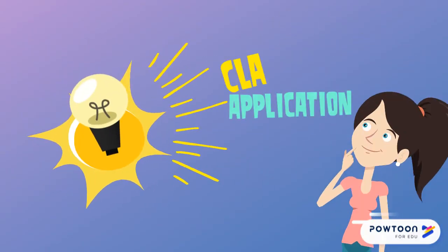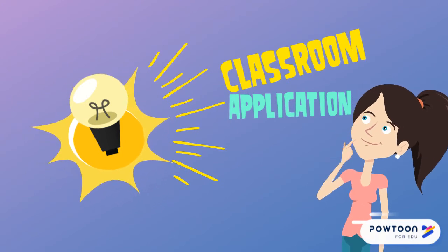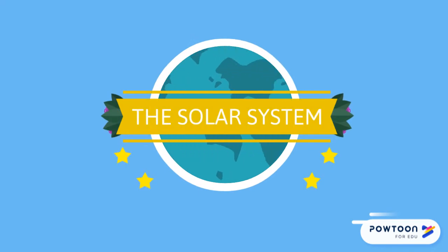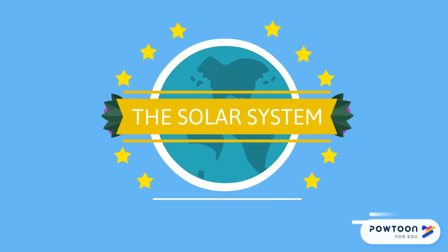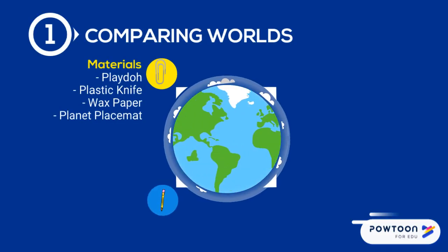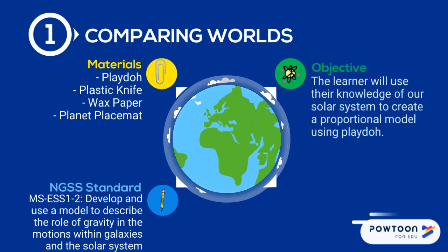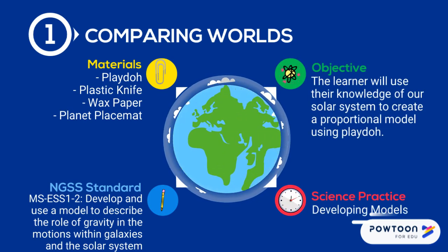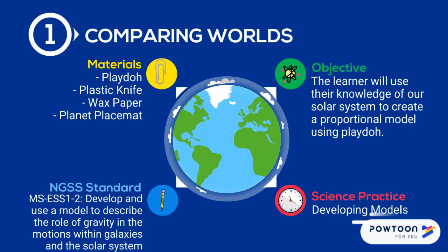Now you might be wondering what developing models might look like in your own classroom. Let's consider this. Let's say you're a middle school teacher and your class was studying the solar system. You want them to develop a model to compare the different worlds in our solar system. Each student would be asked to use their knowledge of the solar system to create a proportional model using play-doh. Students would be given play-doh, a plastic knife, wax paper, and directions on how to shape the sizes of their planets. This covers the middle school earth and space science standard as well as our science practice of developing models, and can be easily adapted to younger grades.